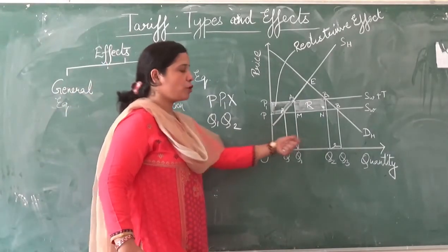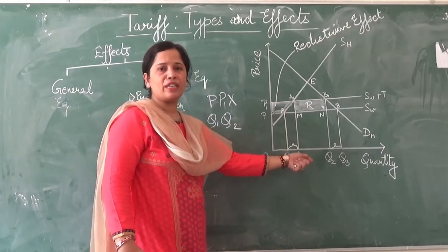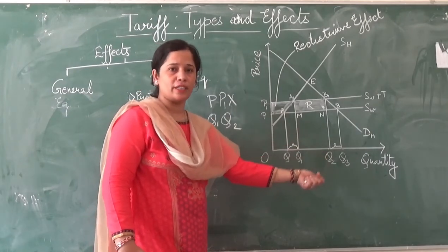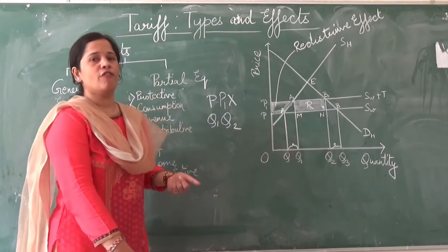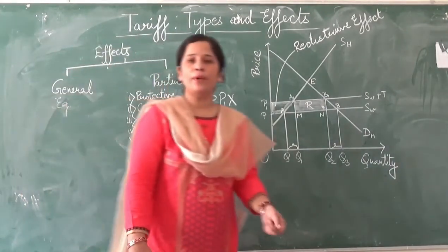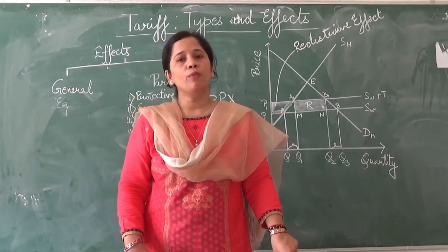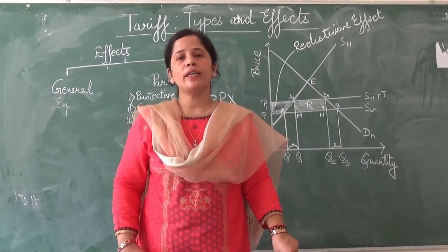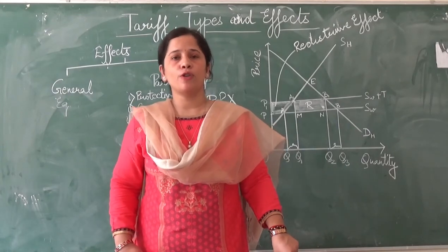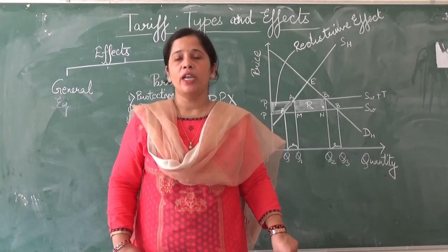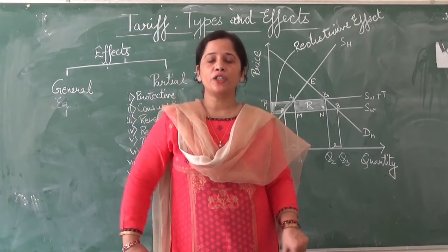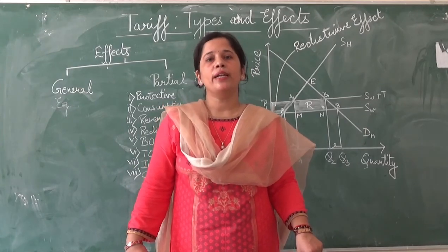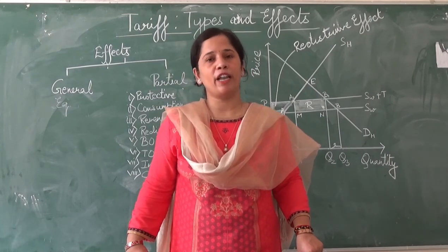The seventh is the income effect. With the imposition of a tariff, the production of the tariff-imposing country increases, employment in the economy rises, and income also increases — so the income effect is favorable. The eighth is the competitive effect: more infant industries can be protected with the imposition of a tariff, so the competitive effect is also favorable. In this way, most effects of partial equilibrium analysis are in favor of the tariff-imposing country.